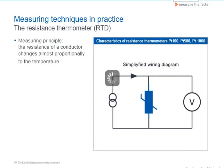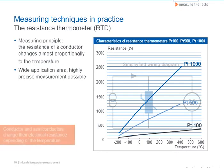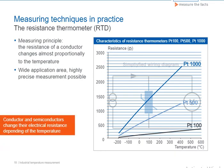In resistance thermometers, the temperature-dependent change in the resistance of electrical conductors is used as a measuring principle. Resistance thermometers are characterized by a wide measuring range from minus 220 to plus 850 degrees Celsius and very high measuring accuracies to 0.001 Kelvin. In the process industry, PT100 are generally used up to 600 degrees Celsius, PT500 and 1000 as a rule up to 400 degrees Celsius. If a measuring resistor PT100 is heated by the measuring material, its resistance climbs quasi-linearly with the temperature, as we can see in the diagram.